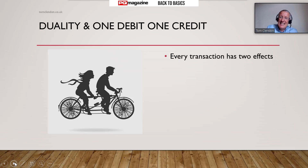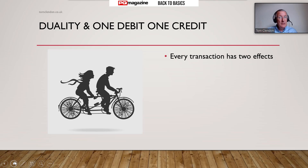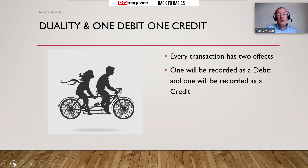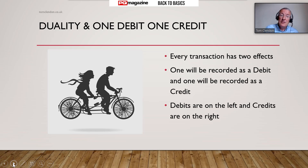There are five elements in the accounts, and when we have a transaction there will always be two effects on those elements. For example, if we repay a loan, that one transaction reduces our money - an asset - and reduces our loan - the liability. So one transaction always has two effects, and these effects: one will be a debit, which we sometimes abbreviate to DR, and one will be termed a credit, which we sometimes abbreviate to CR. Debits are found on the left and credits on the right.